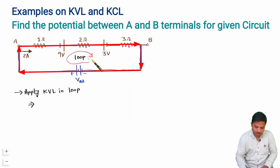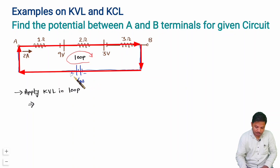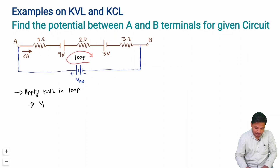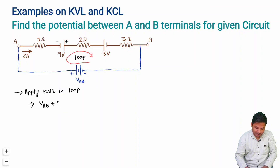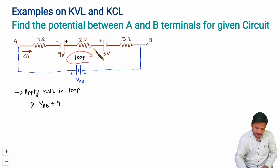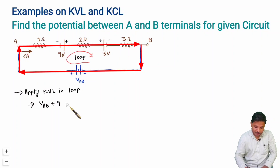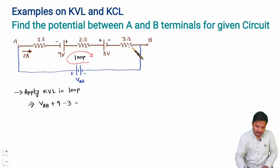Applying KVL in this loop, first we see how many batteries there are. The first battery is VAB, going from minus to plus, so we consider it as plus VAB. The second battery also goes from minus to plus, so we consider it as plus 9. The third battery goes from plus to minus, so we consider it as minus 3. These equal the potential drops across each resistance.